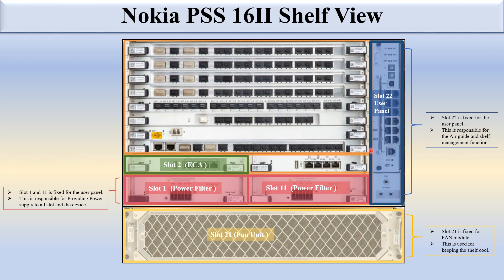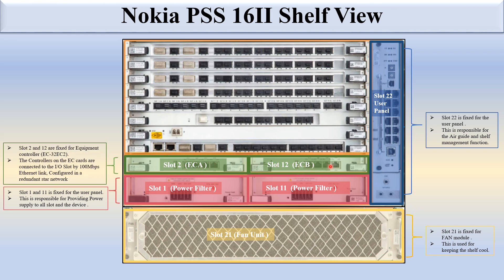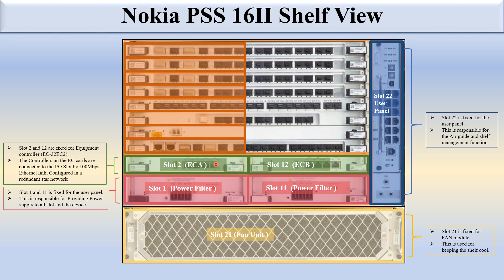Slot 2 and slot 12 are fixed for the equipment controller — slot 2 is equipment controller A and slot 12 is equipment controller B. The equipment controller cards used here are EC 32 and EC 2. The controller cards are connected to the input of each slot via a 100 Mbps Ethernet link configured in a star network. These are the controller cards for the complete shelf.